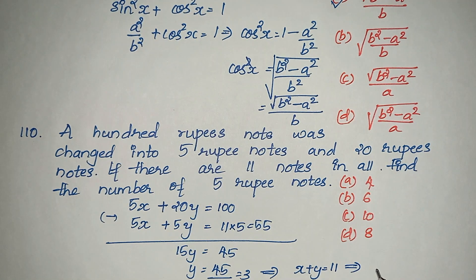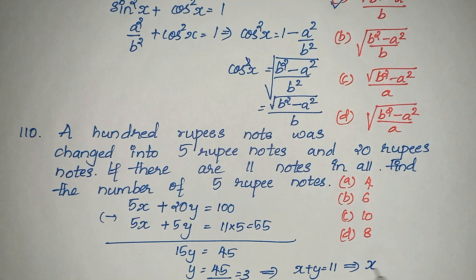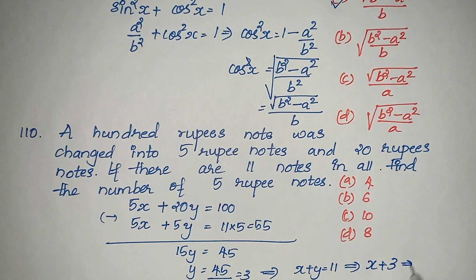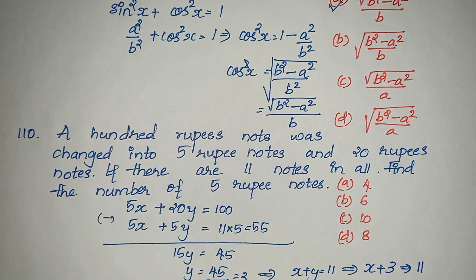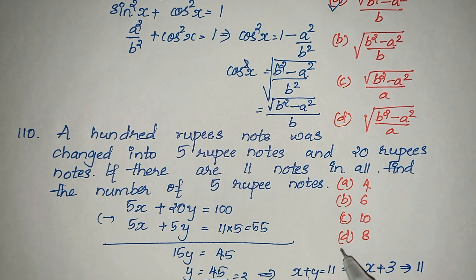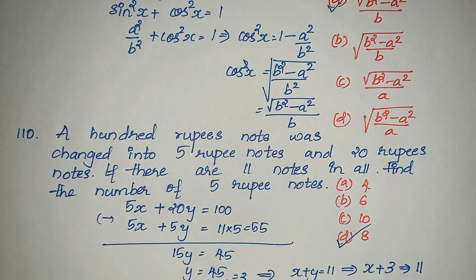Subtracting the equations: multiply x plus y equals 11 by 5 to get 5x plus 5y equals 55, then subtract from 5x plus 20y equals 100. This gives 15y equals 45, so y equals 3. Substituting back, x plus 3 equals 11, so x equals 8. Option D is the answer. Please comment your questions in the comment box.